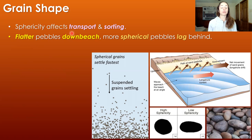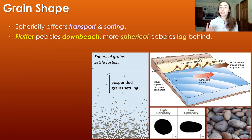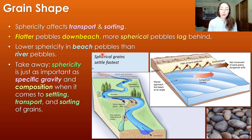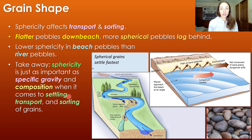Sphericity affects transport and sorting. It's been observed that flatter pebbles are transported down beach during shore phase transport processes, while more spherical pebbles lag behind and aren't transported as far down beach. Also, less spherical grains are typically found in beach pebbles whereas more spherical grains are found in river pebbles. The takeaway is that sphericity is just as important as specific gravity and composition when it comes to settling, transport, and sorting of grains.